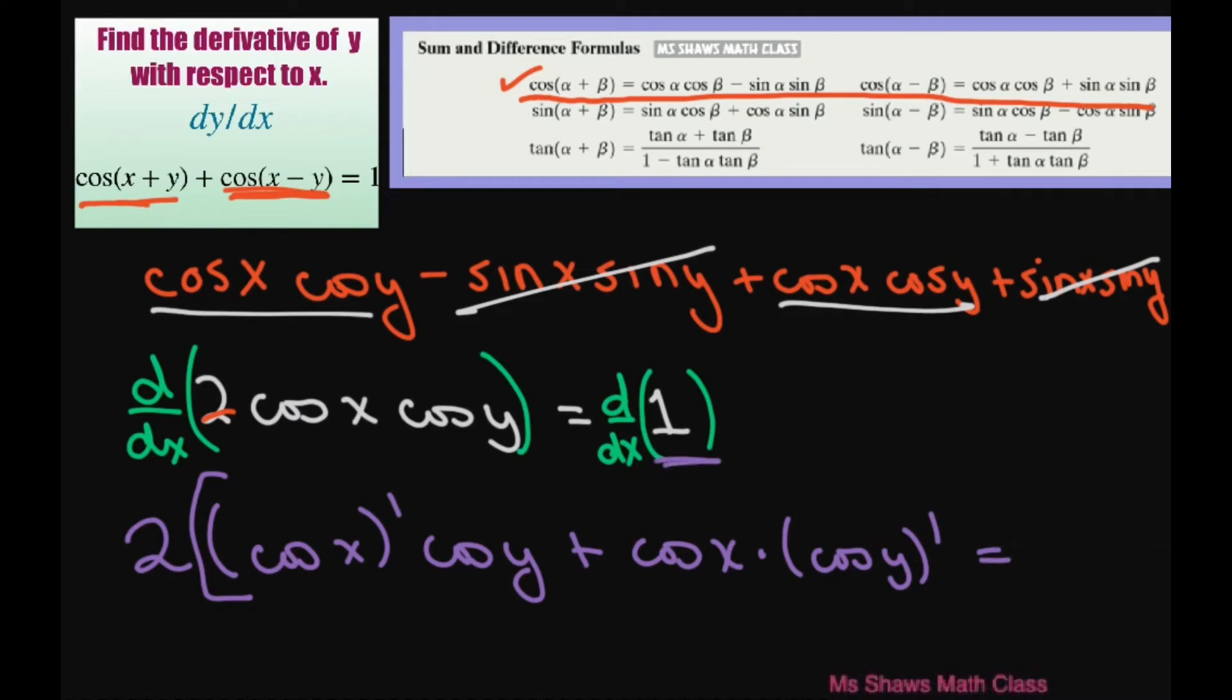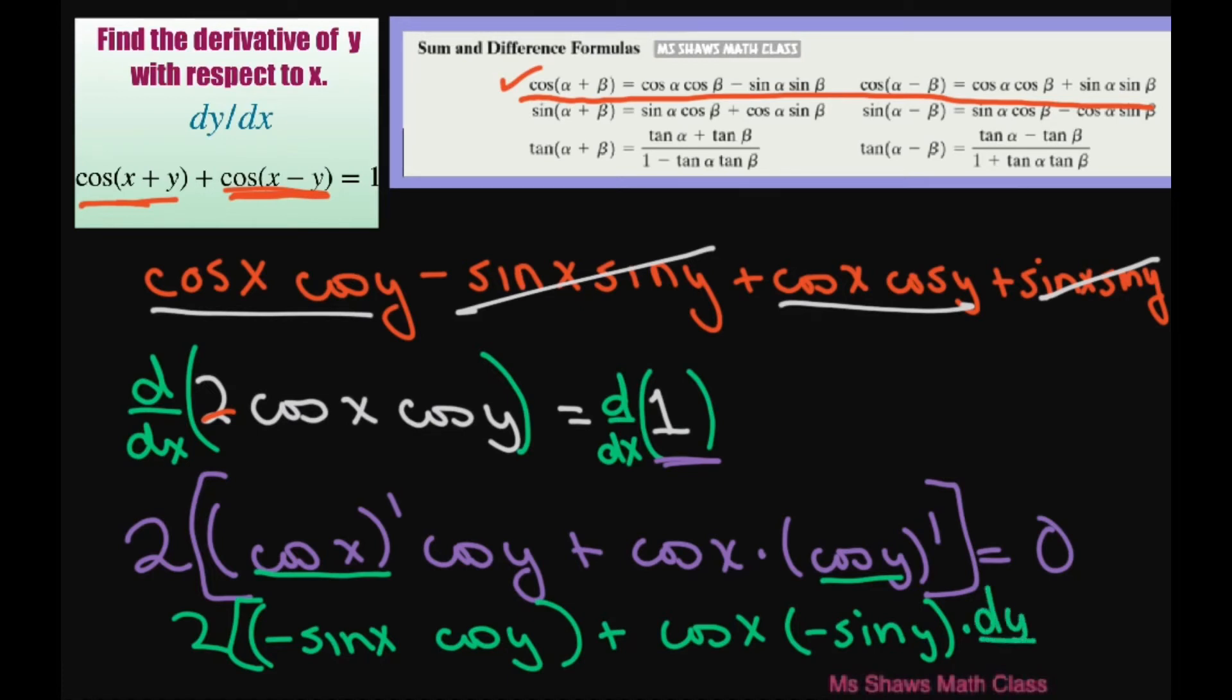And this is just going to equal 0. Alright, so when you differentiate cosine of x, that's just going to be negative sine of x times cosine of y. Alright, and then we have plus cosine of x and differentiating this is going to be negative sine of y. And then you're going to write derivative of y with respect to x.